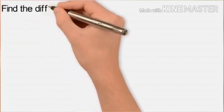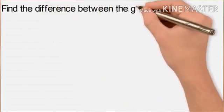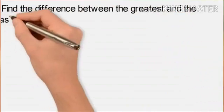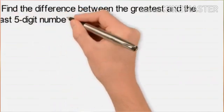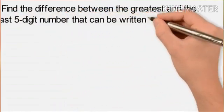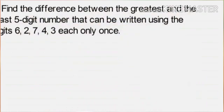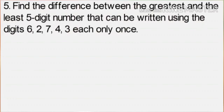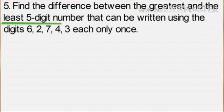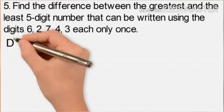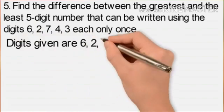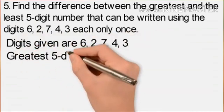Question number 5: Find the difference between the greatest and the least five-digit number that can be written using the digits 6, 2, 7, 4, 3 each only once. For this, let us first write the greatest and least five-digit numbers and then find the difference between them. It is a subtraction problem.